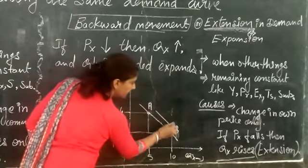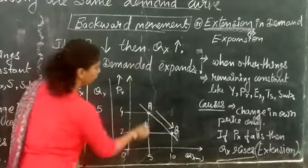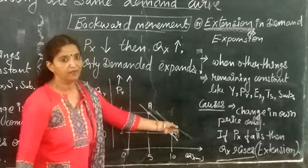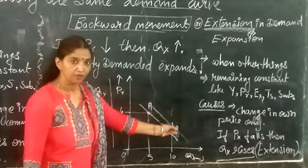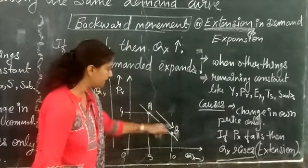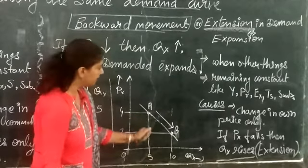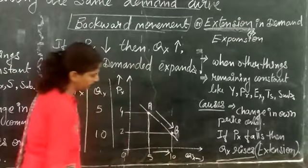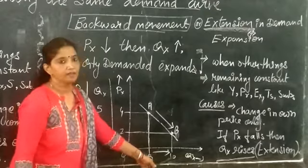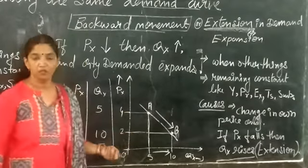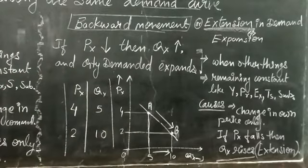The movement of the consumer is from point A to point B. By joining these points we can easily observe that the consumer is moving downward along the same demand curve — that is why it is called downward movement. The consumer's quantity demanded is rising from 5 to 10 units, and that is why it is called extension of demand or expansion of demand.